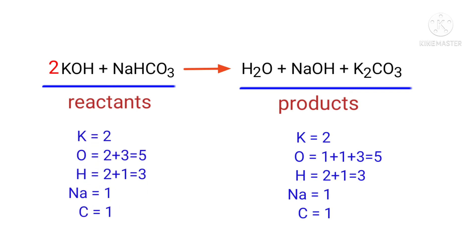The equation is now balanced. There are two potassium atoms, five oxygen atoms, three hydrogen atoms, one sodium atom, and one carbon atom on both sides.